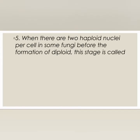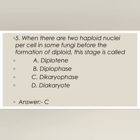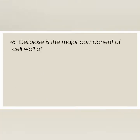Next question: when there are two haploid nuclei per cell in some fungi before the formation of diploid, this stage is called — Diplotene, Diplophase, Dikaryophase, or Dikaryote? The correct answer is option C: Dikaryophase.